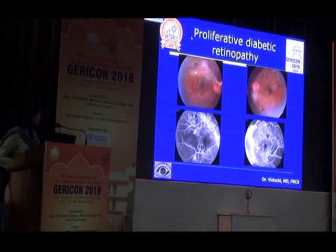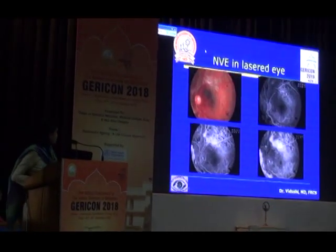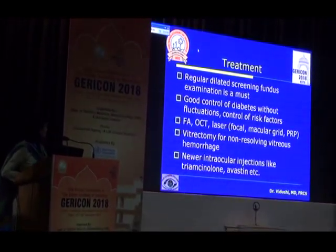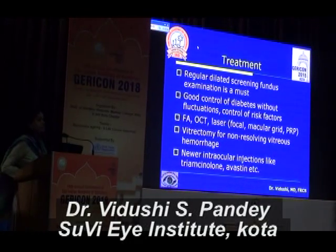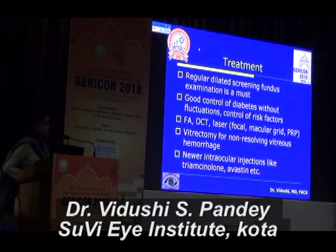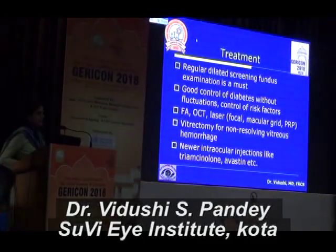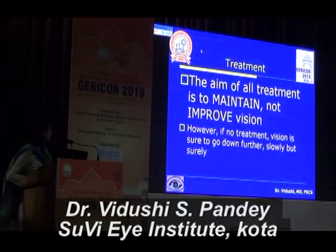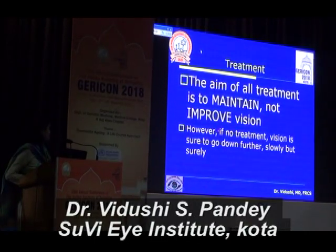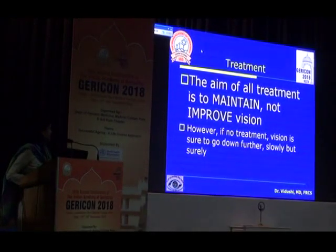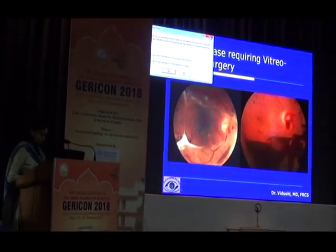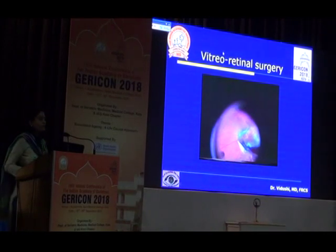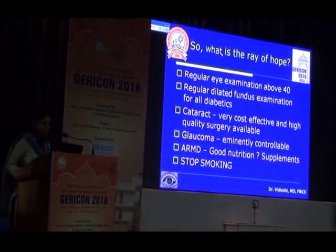In proliferative diabetic retinopathy there is neovascularization and leakage from the disc. Treatment is control of all these risk factors and treating co-existent problems. Regular dilated screening fundus examination in diabetics is a must — this cannot be overemphasized. All diabetics must have a dilated fundus examination at diagnosis and at regular intervals. Good control of diabetes and injections are also part of management. The aim of all treatment is to maintain their vision; without treatment, vision is sure to go down. Very severe cases require surgery such as for vitreous hemorrhage, which is very sophisticated, and we all want to prevent the patient from reaching that stage.